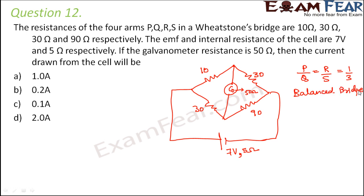Since P by Q equals R by S, this is a balanced Wheatstone bridge. In a balanced Wheatstone bridge, there is no current passing through the galvanometer, so the 50 ohm resistance of the galvanometer doesn't play any role. Now we calculate R equivalent.